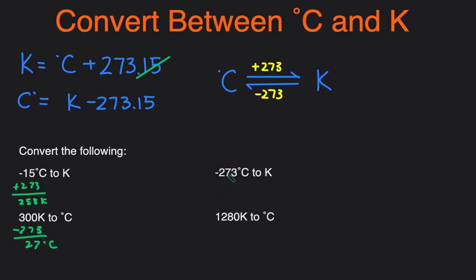Next we have negative 273 degrees Celsius and we're converting to Kelvin, so add 273 to this and we'll get zero degrees Kelvin, which is actually absolute zero, the coldest temperature ever.